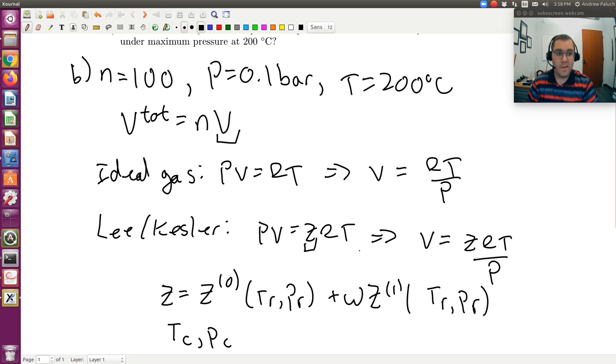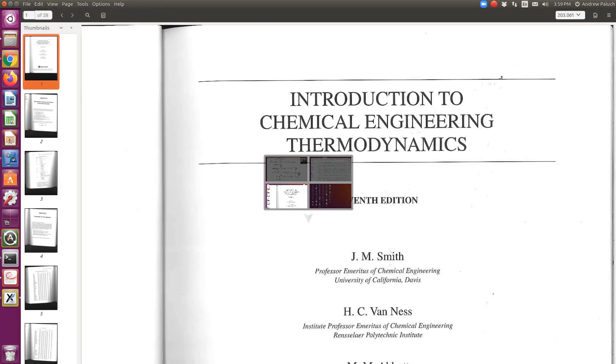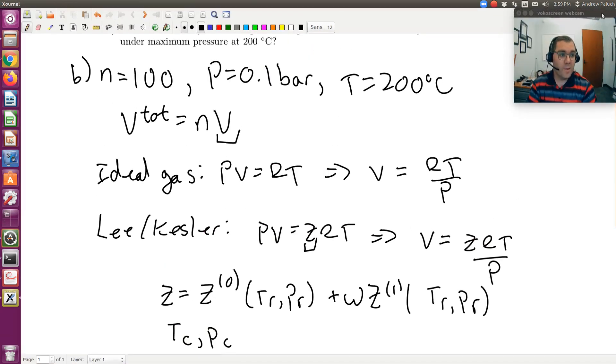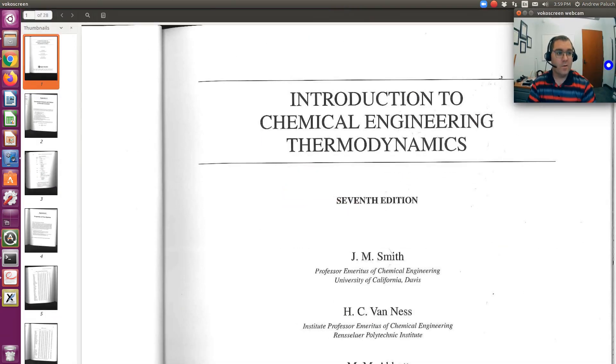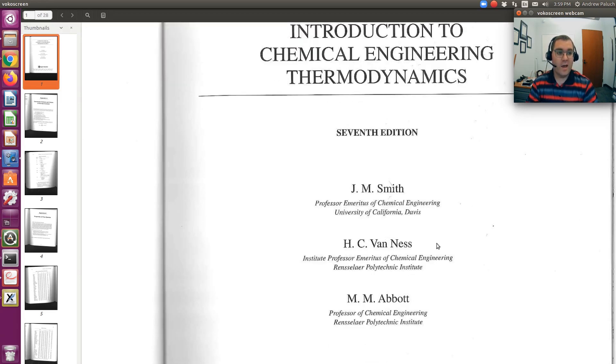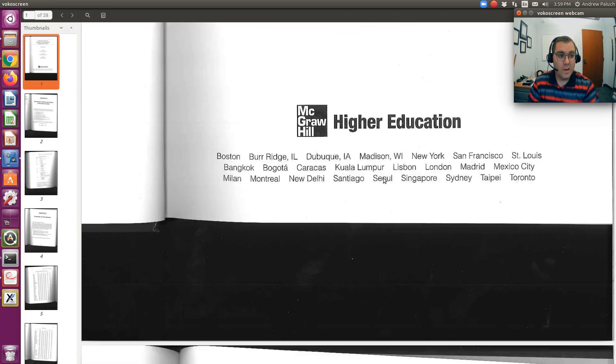Once I have my reduced coordinates, TR and PR, and omega, I would go to, remember there's two appendices uploaded. I go to Smith, Van Ness, and Abbott. What Smith, Van Ness, and Abbott has that our book doesn't, is they have tabulated data for Lee Kessler, whereas our course textbook only has graphs. Personally, I find the tables to be far easier to read than the graphs.